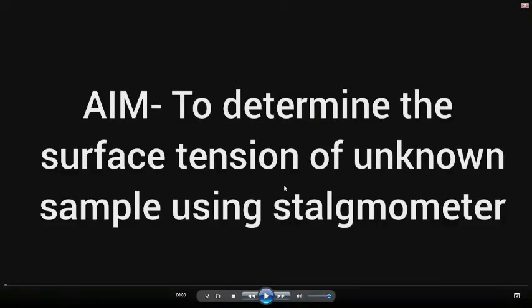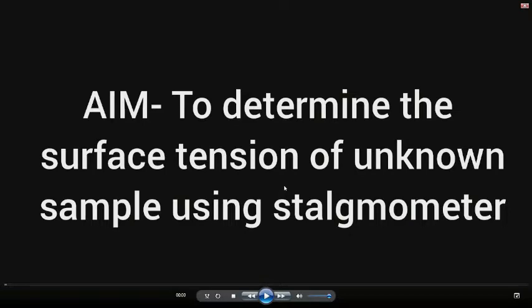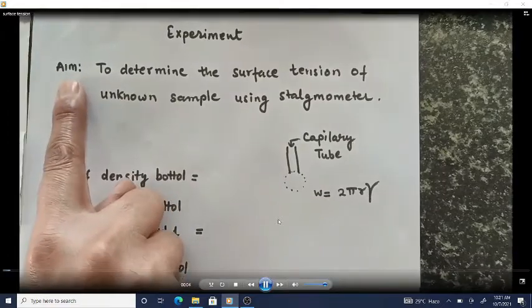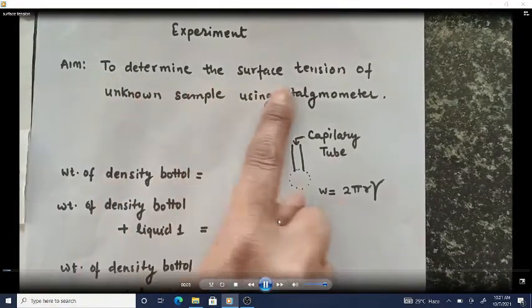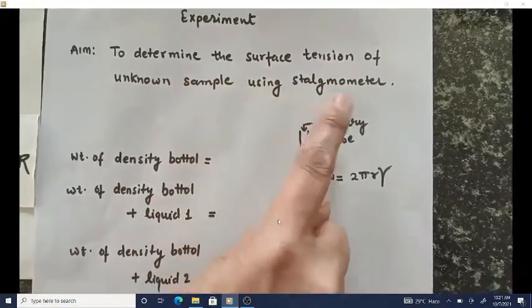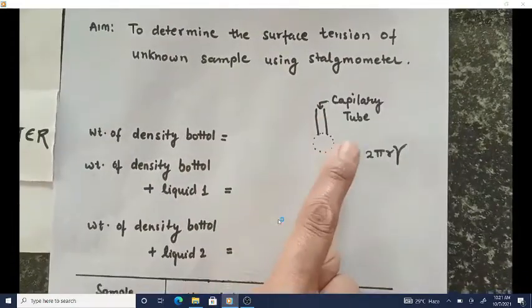Hello everyone, welcome to Spectrum Classes. This is our lab experiment video. In this video we are going to perform an experiment — the aim of the experiment is to determine the surface tension of an unknown sample using a stalagmometer.